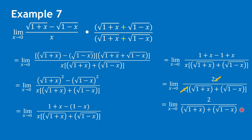Substituting 0 into the function, we get 2 over the square root of 1 plus the square root of 1, which gives 2 for the denominator. Simplifying, we have 2 over 2, and that is 1.